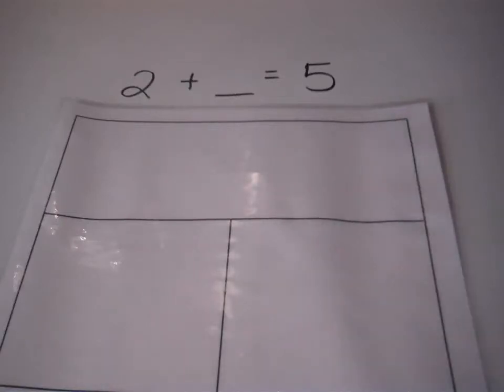So if we're looking at the equation 2 plus blank equals 5, that means that 5 would be our total. So they take their pencil and they circle the total first. So that would be our 5.